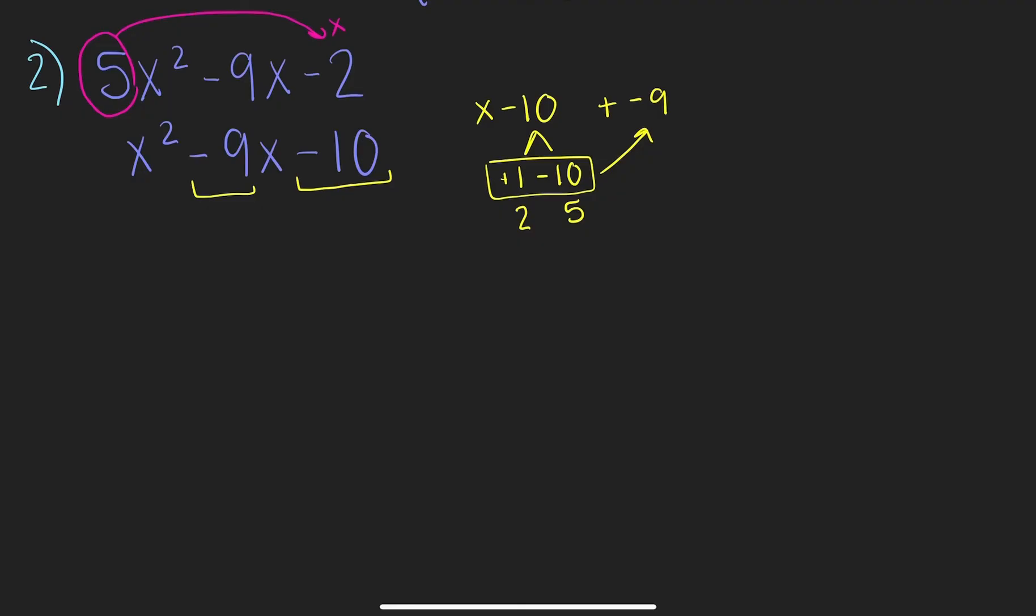So, we're going to use positive 1 and negative 10. So, let's stick those in our parentheses with an x. x plus 1 times x minus 10.